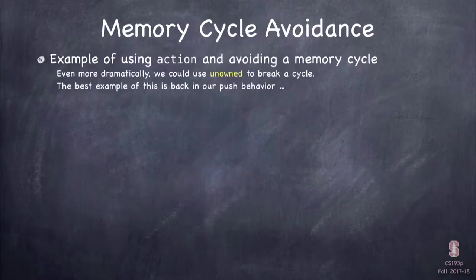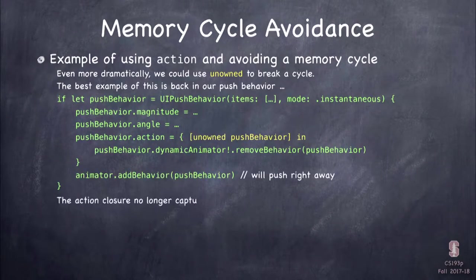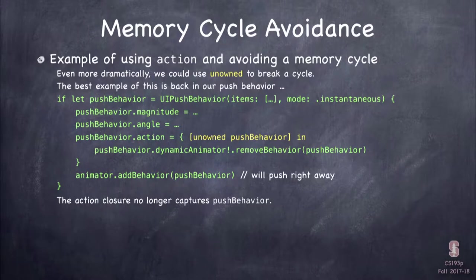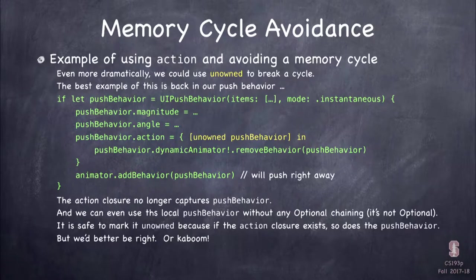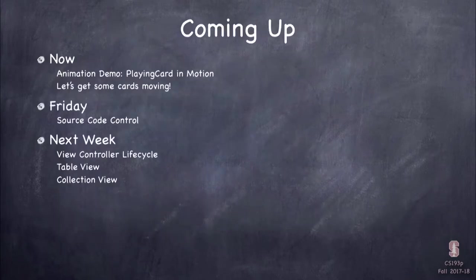For the push behavior, I use unowned instead of weak. By saying [unowned pushBehavior] in the action closure, the cycle is broken because pushBehavior is no longer managed by reference counting. Using unowned is safe here because the push behavior couldn't possibly be executing its action if it wasn't in the heap — so we're guaranteed it's there. This is a classic case for unowned to break the cycle.